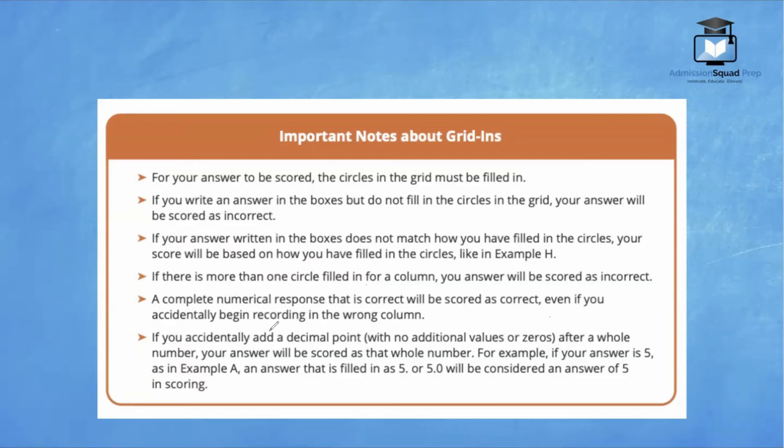If you accidentally add a decimal point with no additional values or zeros after a whole number, your answer will be scored as that whole number. For example, if your answer is five, as in example A, an answer that is filled in as five point or 5.0 will be considered an answer of five in scoring. So that would still be correct.